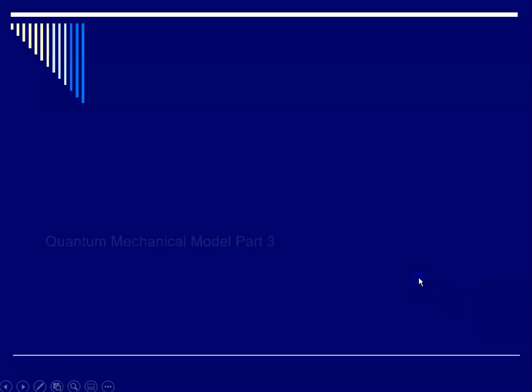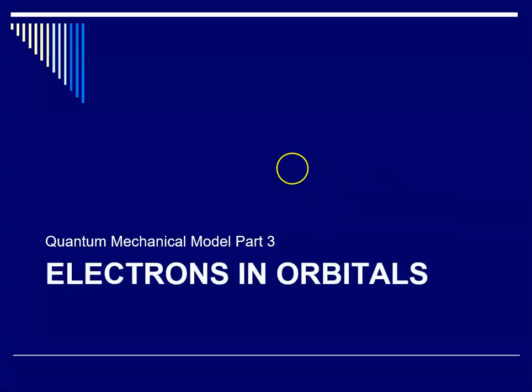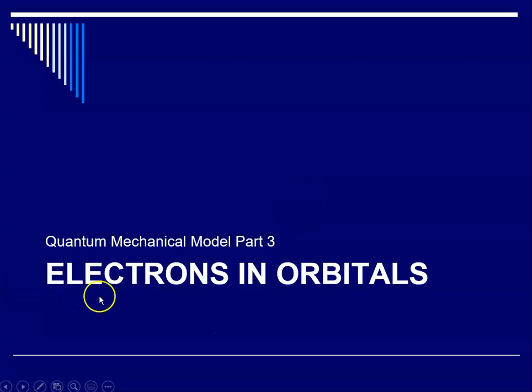Hello class, this is Ms. Augustine and we are going to continue talking about the quantum mechanical model of the atom. This is part three of the quantum mechanical model, and we're going to talk about electrons in orbitals — specifically how we diagram where the electrons are for an atom.